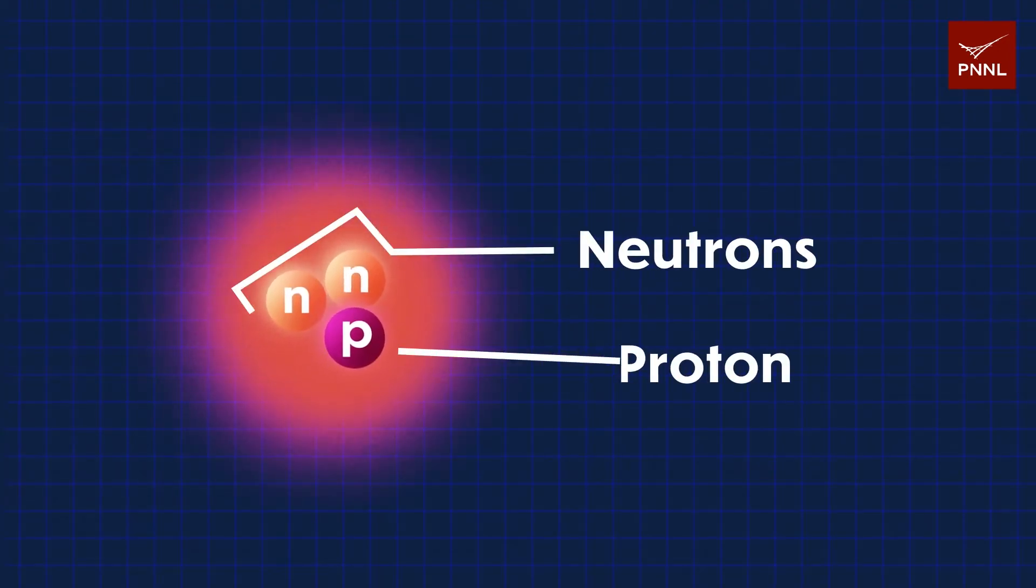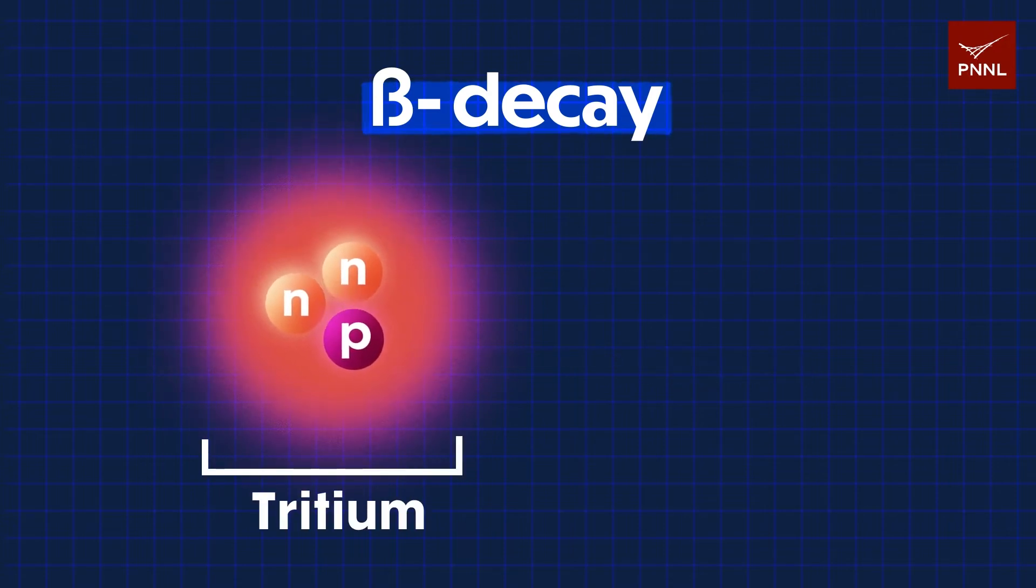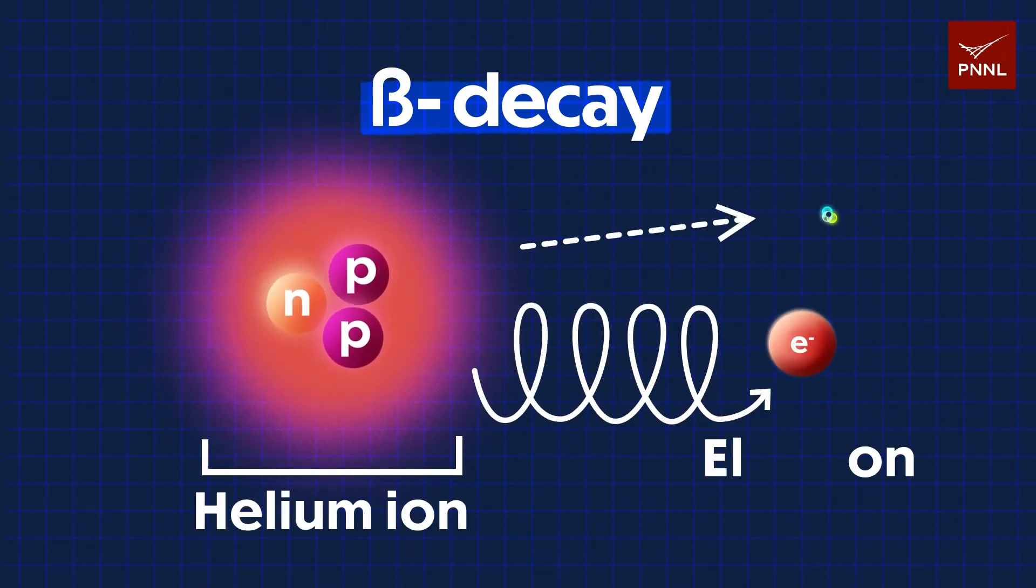Here's how it works. First, the research team tracks and records a natural occurrence called beta decay. When a radioactive variant of hydrogen, called tritium, decays, three new subatomic particles are created: a helium ion, an electron, and the exotic neutrino.